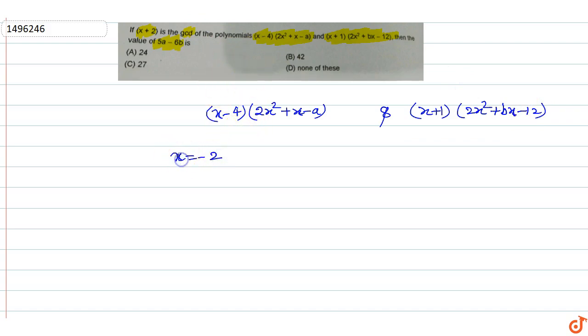We put x=-2 into the first equation: (-2-4)(2×(-2)²-2-a) = 0. This gives (-6)(8-2-a) = 0.